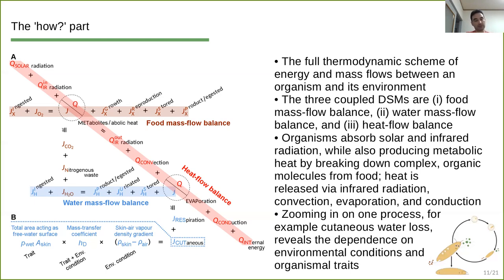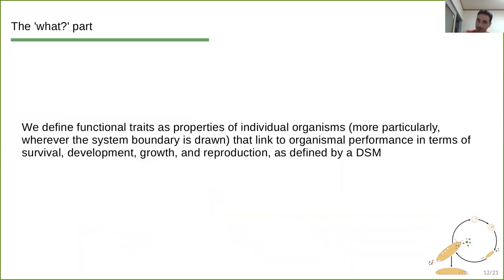And then if we zoom into one particular process, for example cutaneous water loss, we can see that this process will typically have some environmental dependence. So for example in this case, skin-air vapor density gradient, which the larger the gradient, the more water needs to be lost in order to maintain such a gradient. There is mass transfer coefficient, which is both a trait but has some environmental dependence. So sometimes the line between whether a quantity is environmental variable or a trait is not entirely clear, and we need to look deeper into details. But then there are clear-cut traits like total area acting as a free water surface, so basically that part of skin area through which water is really lost.